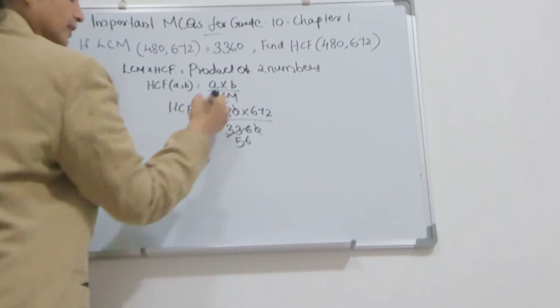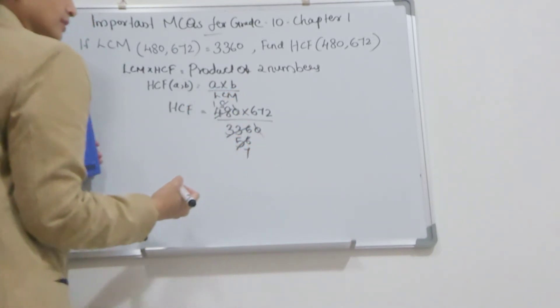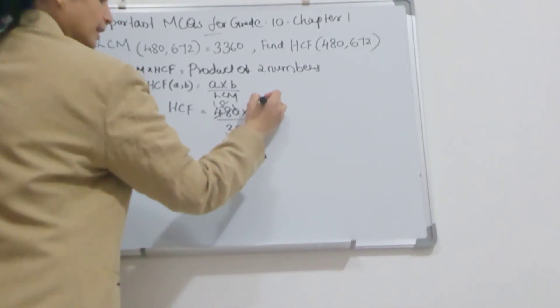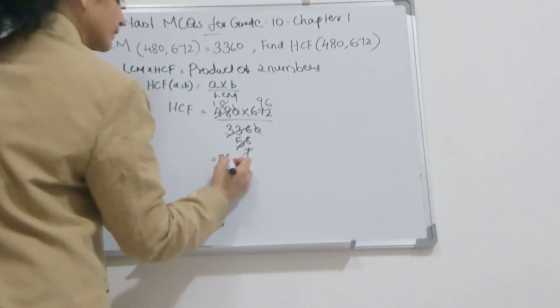And again, here 8 goes into 8 once. Here 7. So 672 divided by 7. And here 9, and 6. So HCF equals 96.